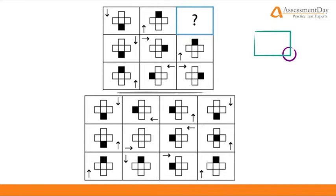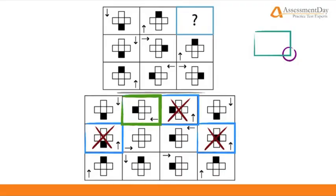Let's look at our answer options. We can see only four boxes have the arrow in the bottom right corner, and only one of them adheres to the same direction pattern, this one here, box B. Therefore, this is the correct answer.